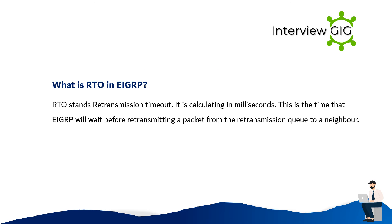What is RTO in EIGRP? RTO stands for Retransmission Timeout. It is calculated in milliseconds. This is the time that EIGRP will wait before retransmitting a packet from the retransmission queue to a neighbor.